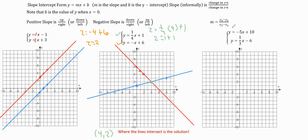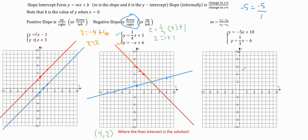For this last system, we graph y equals negative 5x plus 10. We start at the y-intercept, putting the dot at positive 10. Then we go down 5 and right 1 because the slope is negative 5, which is the same as negative 5 over 1. That's negative slope, so from the first dot we go down 5 and right 1 to get a second dot. We can do that again, then draw a straight line.